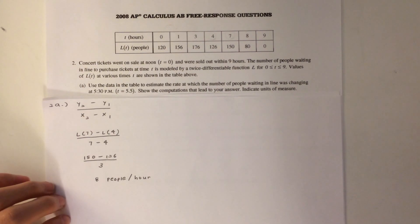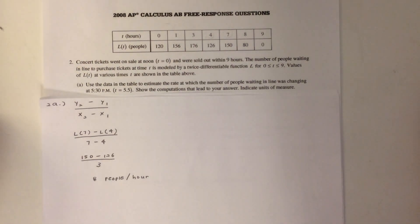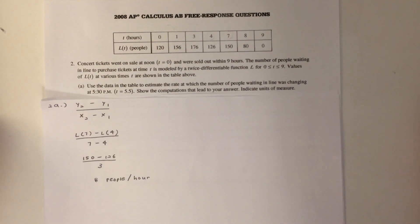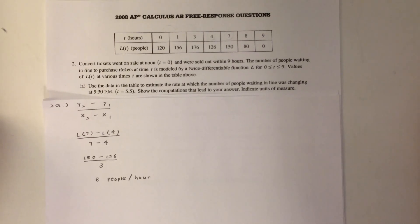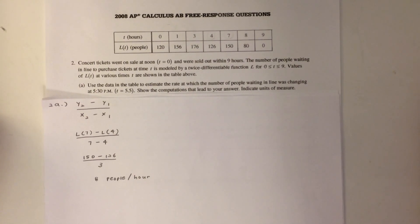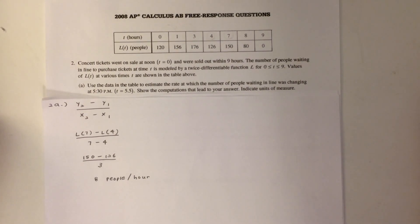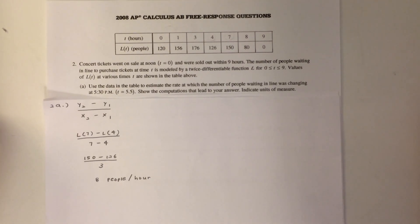which in this case are t equals 4 and t equals 7. So using the slope formula y2 minus y1 over x2 minus x1, we substitute with l of 7 minus l of 4 over 7 minus 4. That gives us 150 minus 126 over 3,